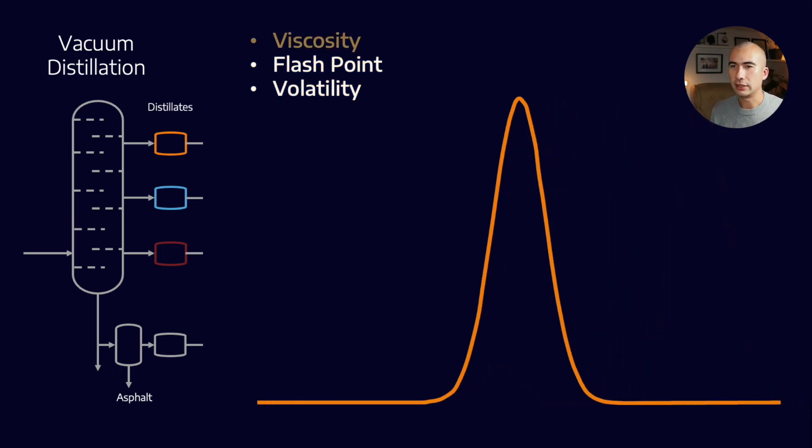As an example, if I have a vacuum distillation process which doesn't make hard cuts, then if I increase the size of the distribution, that shows you that I have more light ends. And light ends contribute to volatility and flashpoint.